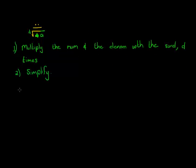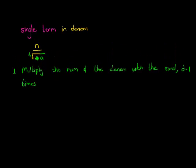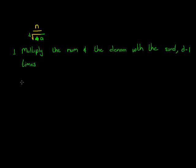For example, take 1 over the square root of 2. The degree of the surd is 2, so we multiply d minus 1 = once. So we multiply the numerator and the denominator by the square root of 2 once. If the degree were 3, we'd multiply twice.